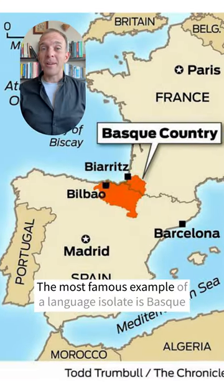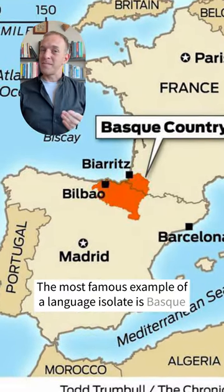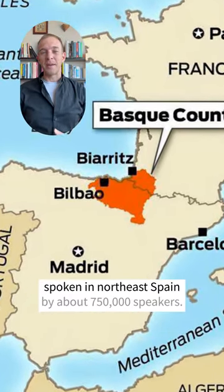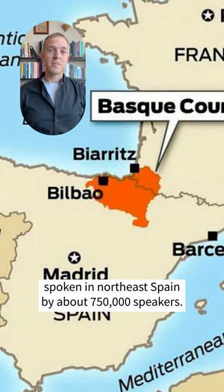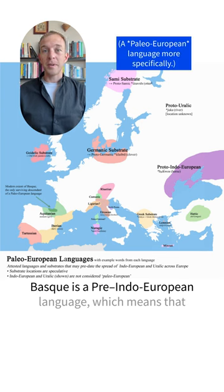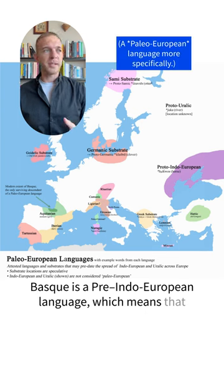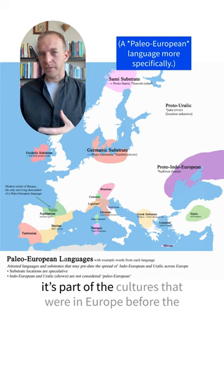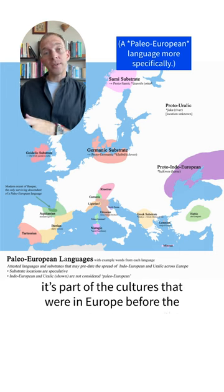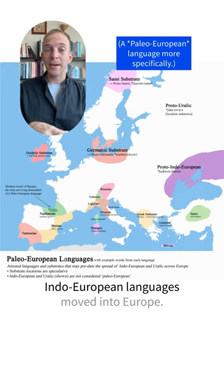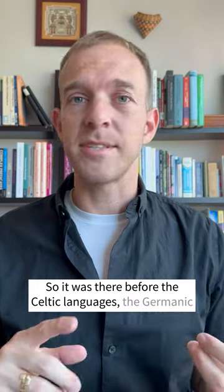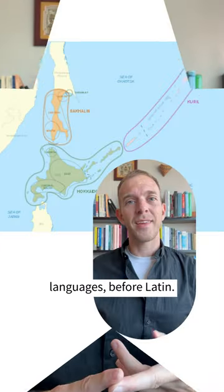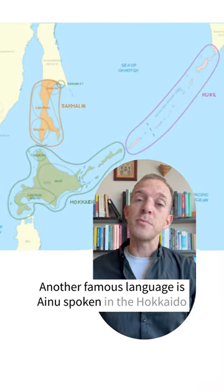The most famous example of a language isolate is Basque, spoken in northeast Spain by about 750,000 speakers. Basque is a pre-Indo-European language, which means that it's part of the cultures that were in Europe before the Indo-European languages moved in — so it was there before the Celtic languages, the Germanic languages, before Latin.